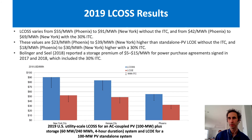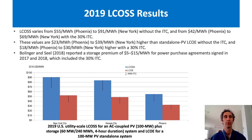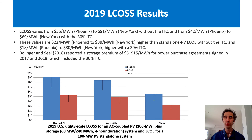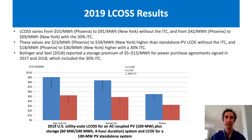So here are our results. For LCOSS, we calculate that it varies from $55 per megawatt hour to $91 per megawatt hour without the ITC, in the case of Phoenix and New York, and from $42 per megawatt hour to $69 per megawatt hour with the 30% ITC, again from Phoenix to New York.